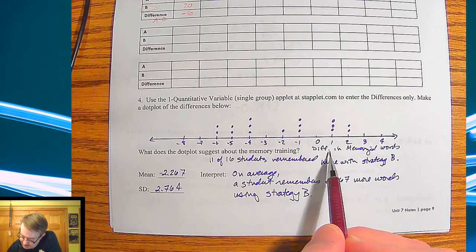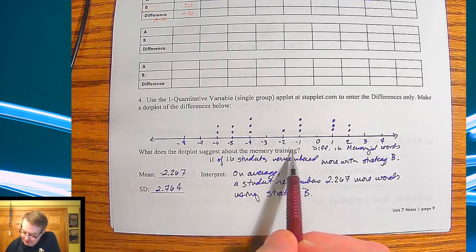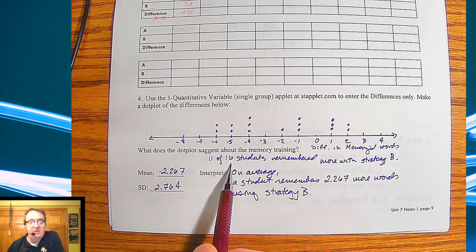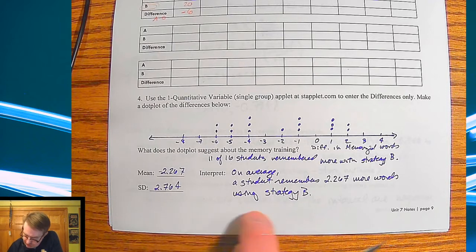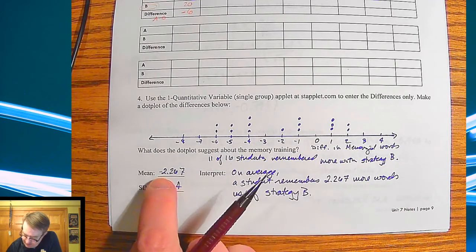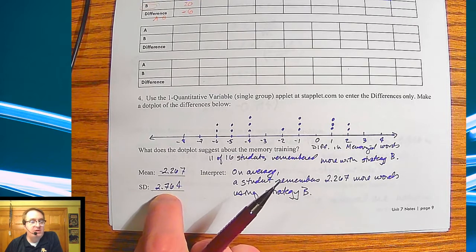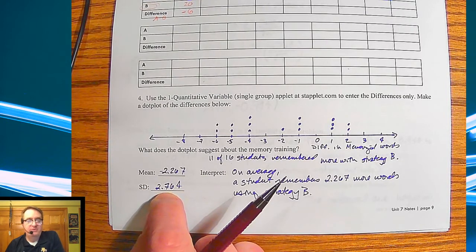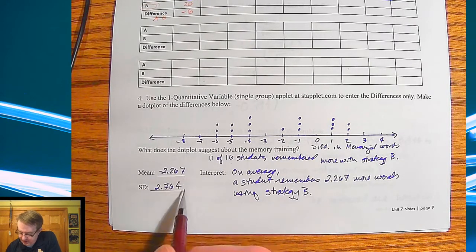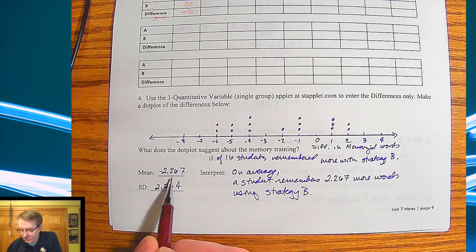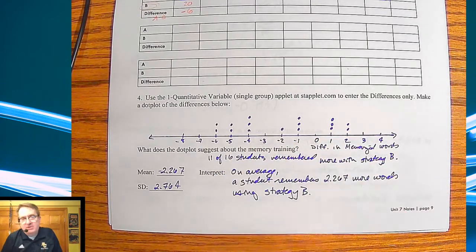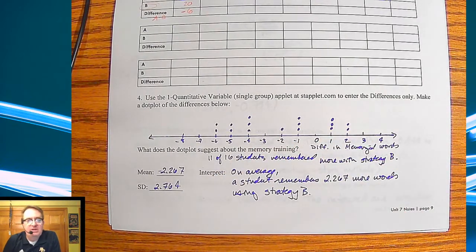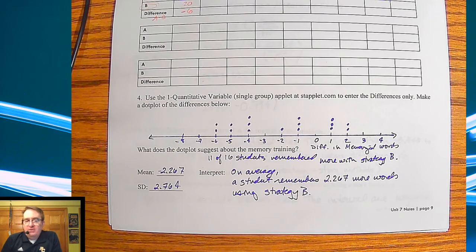So this was the difference in memorized words. What does the dot plot suggest about memory training? For 11 of the 16 students, they remembered more with strategy B, the story one. And then we just went through here and played around with it. So my mean was a negative 2.267, and my standard deviation is 2.764. So the interesting thing here that stands out is that the standard deviation is bigger than the gap to zero. So depending upon how the confidence interval shakes out, it may or may not show that there's a difference.